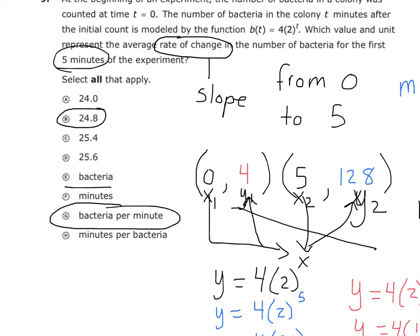So on the state test, you could do the whole thing right, but if you didn't select both the bacteria that were growing and the unit that it needed, you'd get it wrong. You got to have them both.